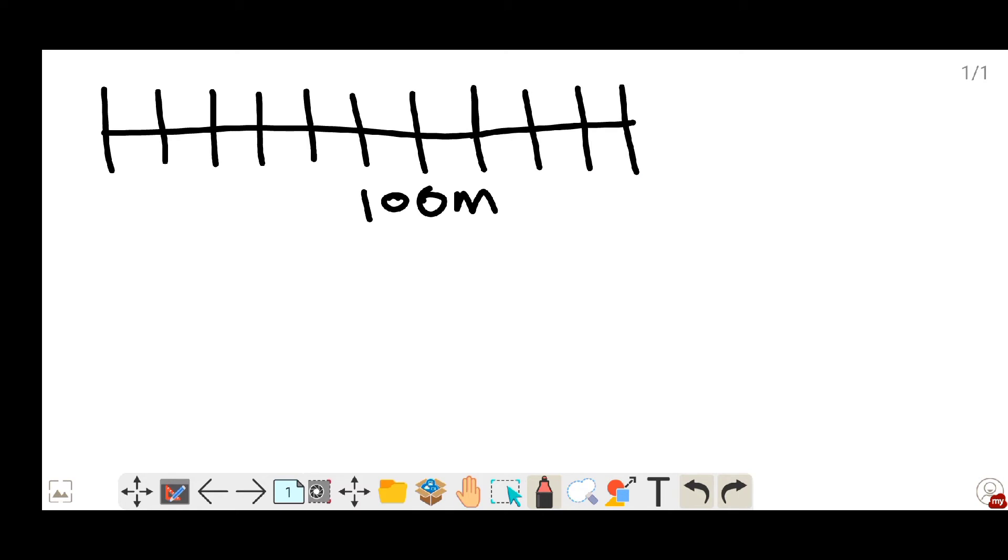Why we minus 1? For example, if I have a string with a length of 100 meters and I wanted to divide it by 10 parts, what I do is I divide 100 with 10, and then I will get 10 parts. Like here, 1, 2, 3, 4, 5, 6, 7, 8, 9, 10.